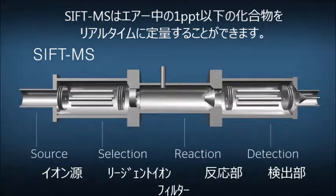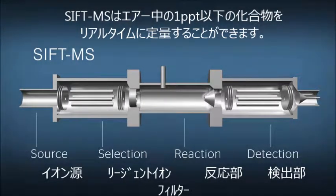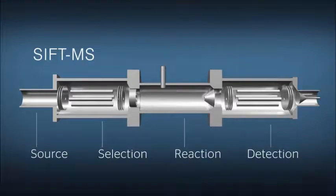Selected ion flow tube mass spectrometry instantly quantifies compounds in air to less than one PPT.